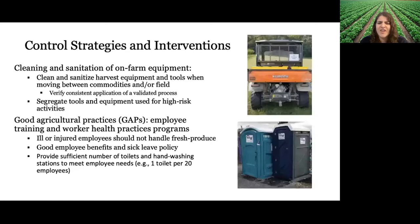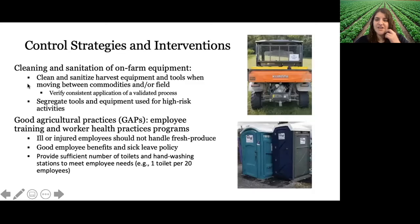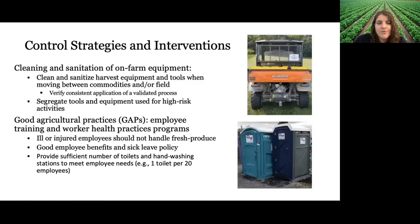Control strategies and interventions include cleaning and sanitation of on-farm equipment — making sure you're cleaning and sanitizing harvest equipment and tools when moving between commodities or between fields (high-risk to low-risk areas). Verifying consistent application of cleaning and sanitation procedures and using validated procedures is essential. Good agricultural practices (GAPs) are also really important: worker health practice programs to ensure ill employees don't handle produce, good sick leave policies so employees don't show up sick because they need the paycheck, and providing a sufficient number of toilets and handwashing facilities to meet employee needs.